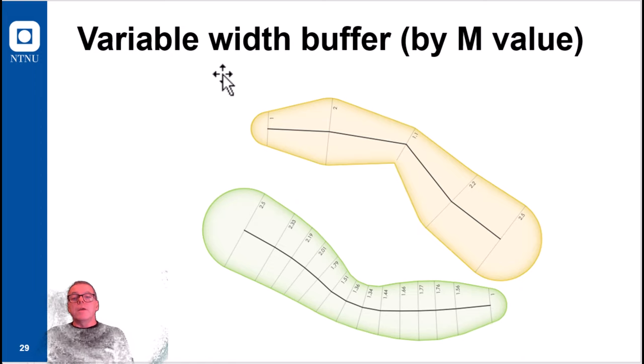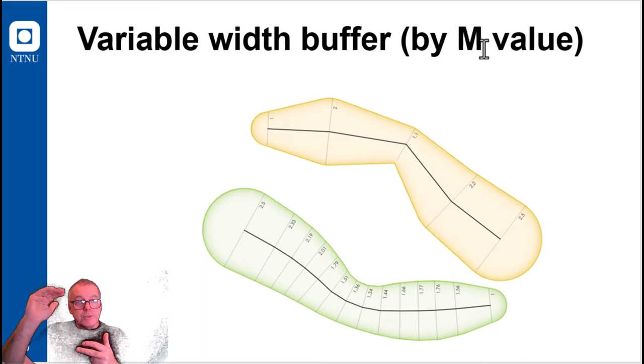And a bit more sophisticated variant of this is a variable width buffer, where the buffer width is varied by the M value. And the M value is something which is part of the geometry of the linear feature. You may know that a line consists of many vertices, and in these vertices you have the X and Y value. You may also have a Z value showing the altitude, and you may have an M value where M is short for measure.